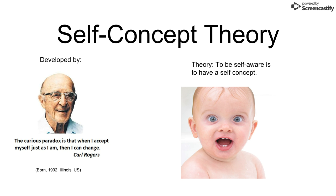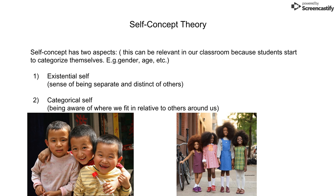The self-concept theory was developed by Carl Rogers. Rogers said that to be self-aware is to have a self-concept. Self-concept has two aspects: the existential self and the categorical self. The existential self is the sense of being separate or distinct from others — we start realizing who we are. The categorical self is when we become aware of where we fit relative to others around us, categorizing ourselves by gender, age, and so on.